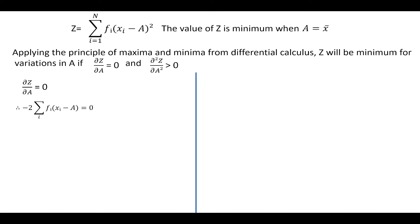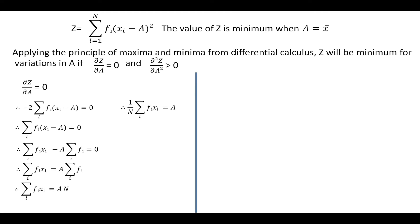On further simplifying, we get 1 upon n, summation of fi xi, is equal to a — which is nothing but the arithmetic mean x bar is equal to a. Thus, we have proved the first condition that dou z by dou a is equal to 0.